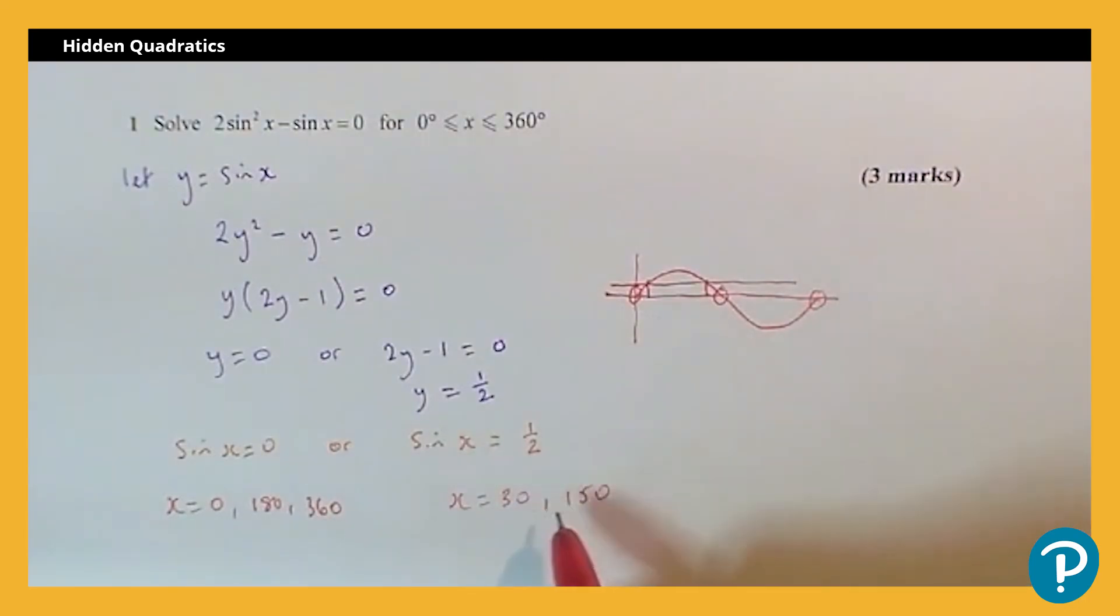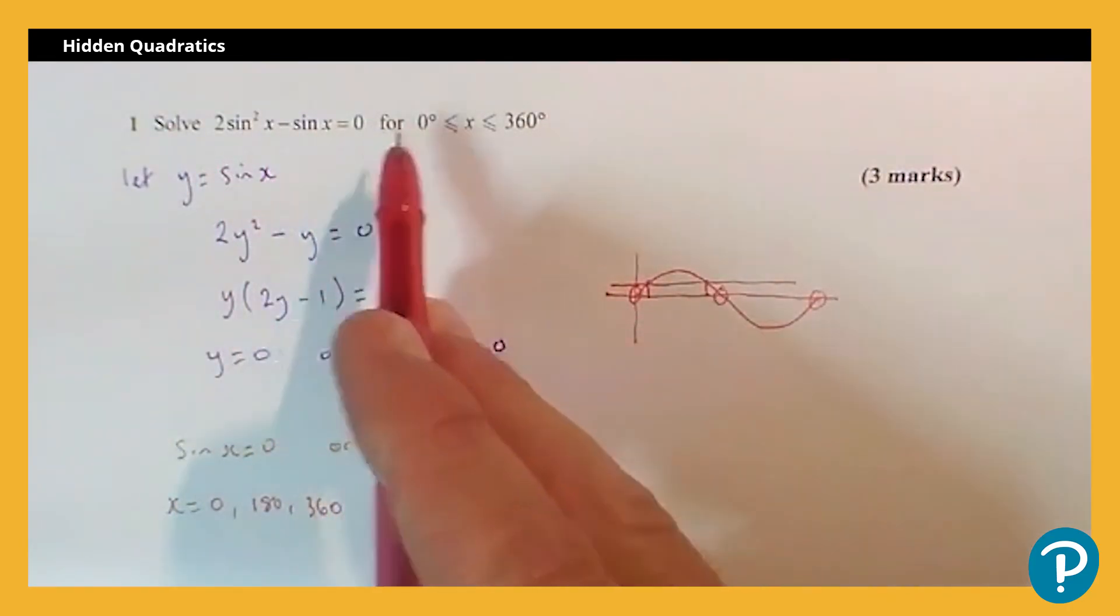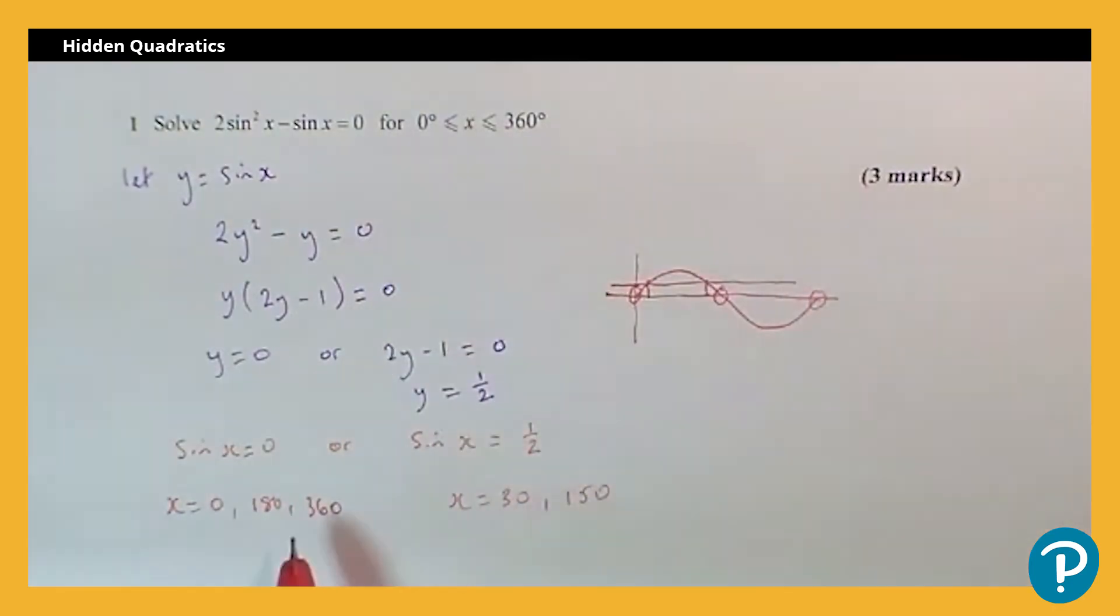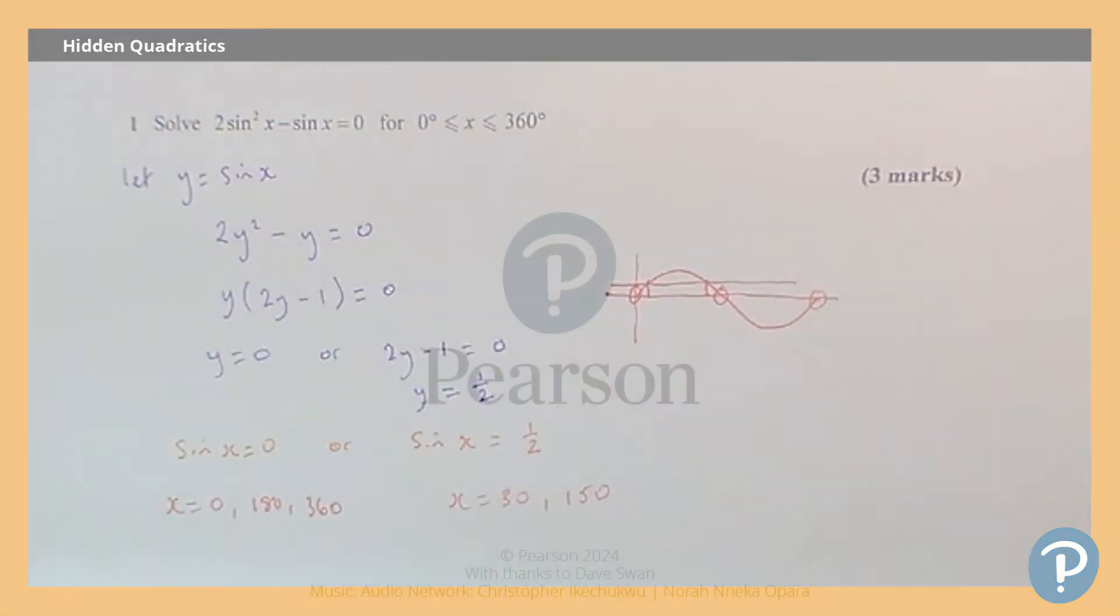So I've got five solutions to this equation here. So for 2sin²x - sinx = 0 in the range 0 to 360 degrees, x could be 0, 180, 360, 30, or 150.